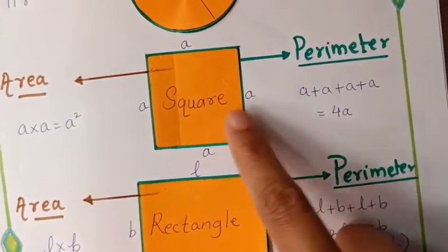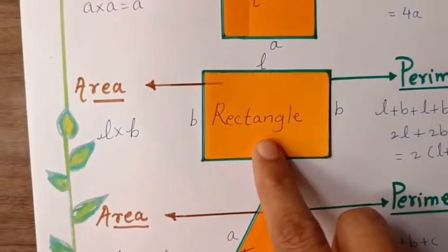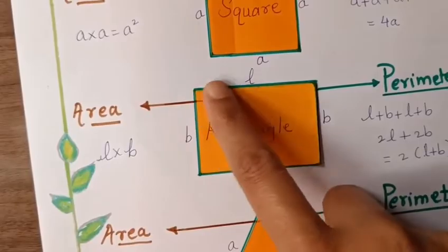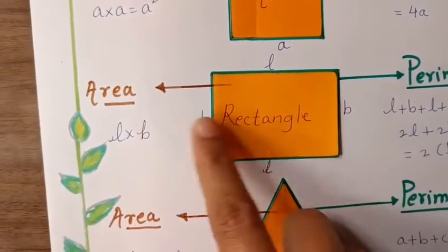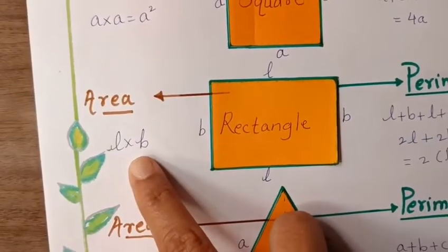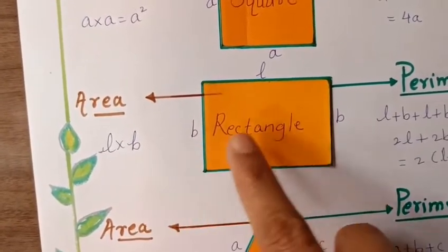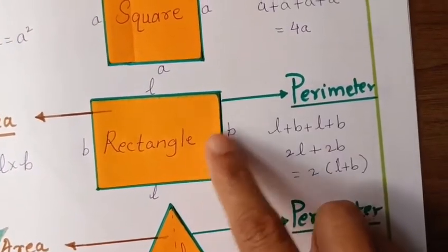Then rectangle. Here, orange area is its area and the border—this green border is perimeter. The area of rectangle is L×B, means length into breadth. And perimeter, the formula of perimeter of rectangle is 2(L+B), means length plus breadth.